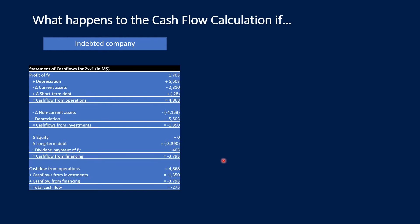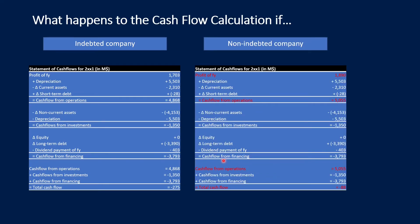Let us again make the assumption about the indebted company and the non-indebted company. I have adjusted all those figures in line with all the previous figures. The profit of the financial year is higher if you do not use debt, and accordingly the cash flow from operations is higher, and the total cash flow is higher. The difference here is of course the interest payment and the tax shield — you don't have to pay interest, but you don't get the tax shield either.